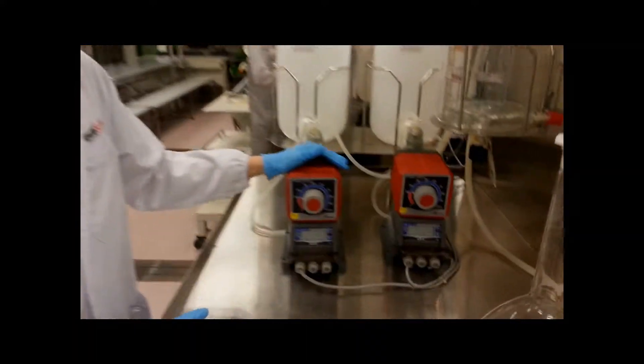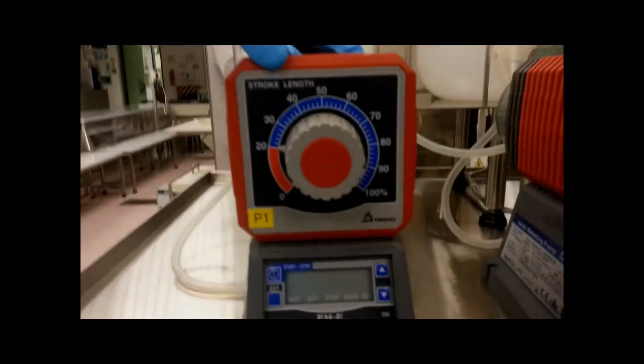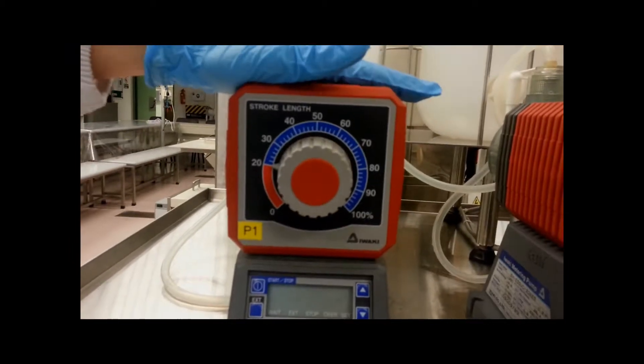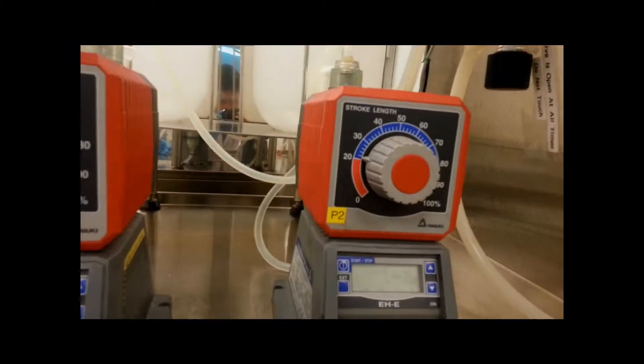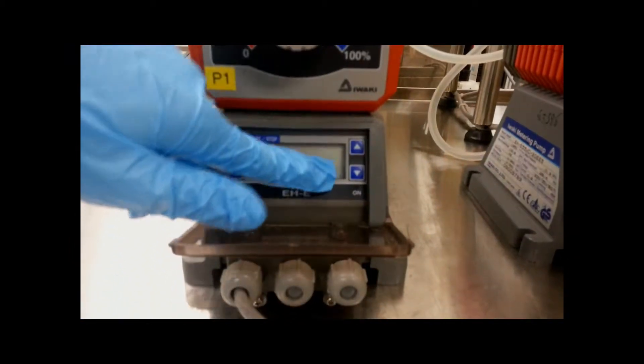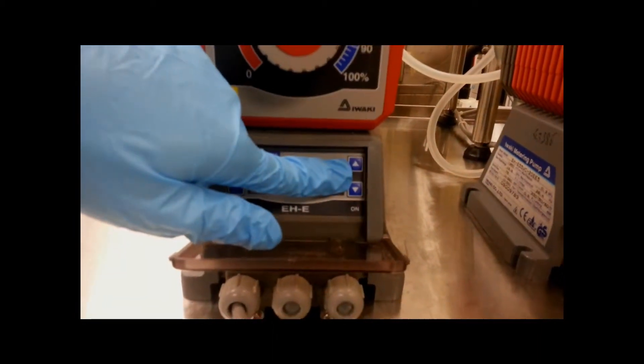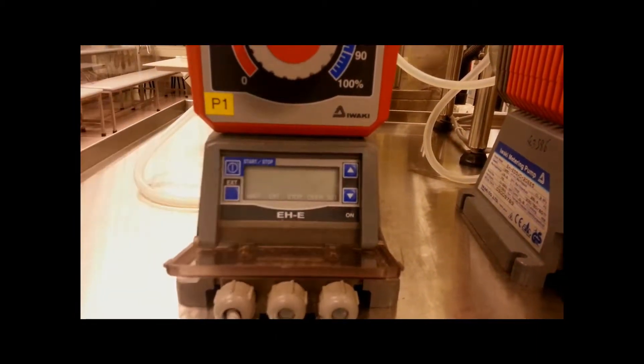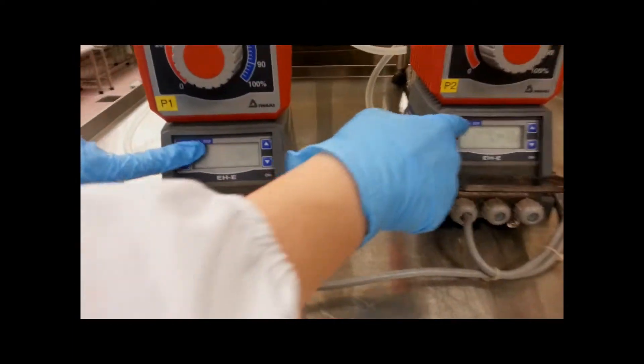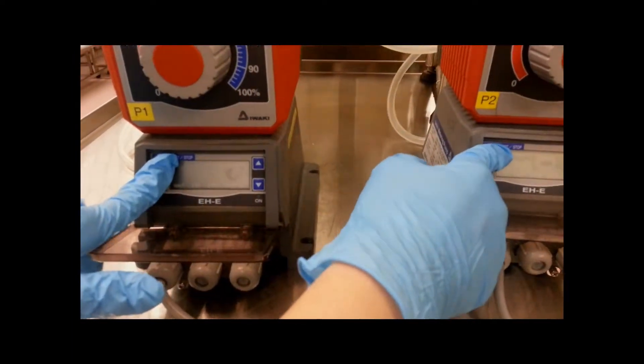Adjustment of pumps. Firstly, you turn the stroke length onto 20 for both pumps and you adjust the RPM using this button over here to 250 RPM. After which, you will be required to use both hands at the same time to turn on the pump.